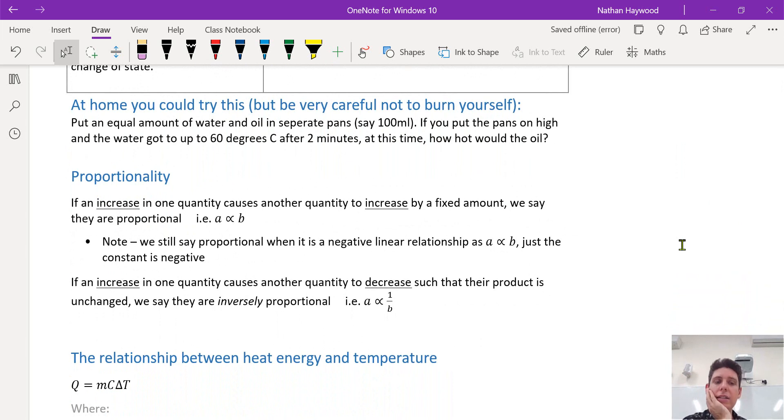Proportionality is an increase in one quantity that affects another quantity. So as one increases, the other one increases. So the amount of energy input into the system increases, the temperature will increase. Therefore, the energy input is proportional to the temperature.